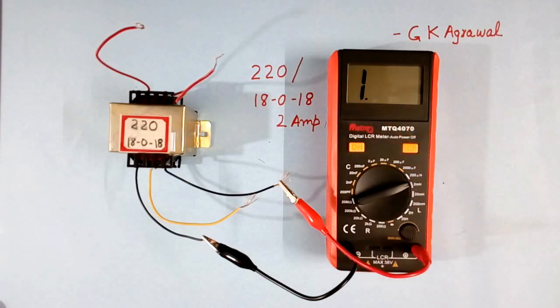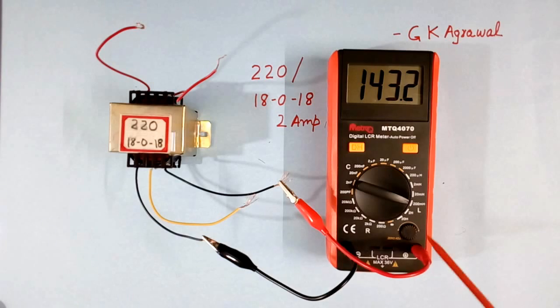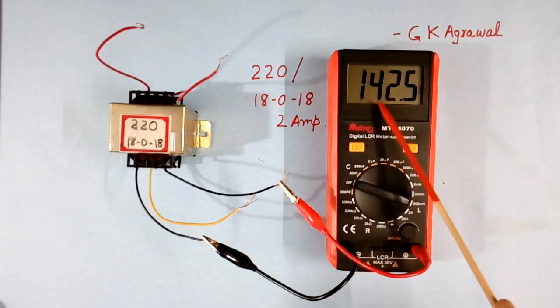This is out of range. I will change the scale. So the value of L is coming 142 millihenry. This is a very high value.